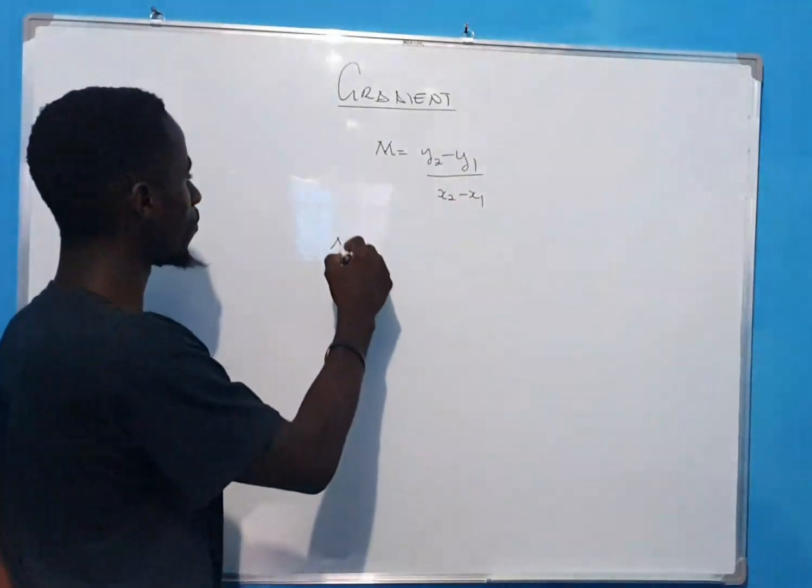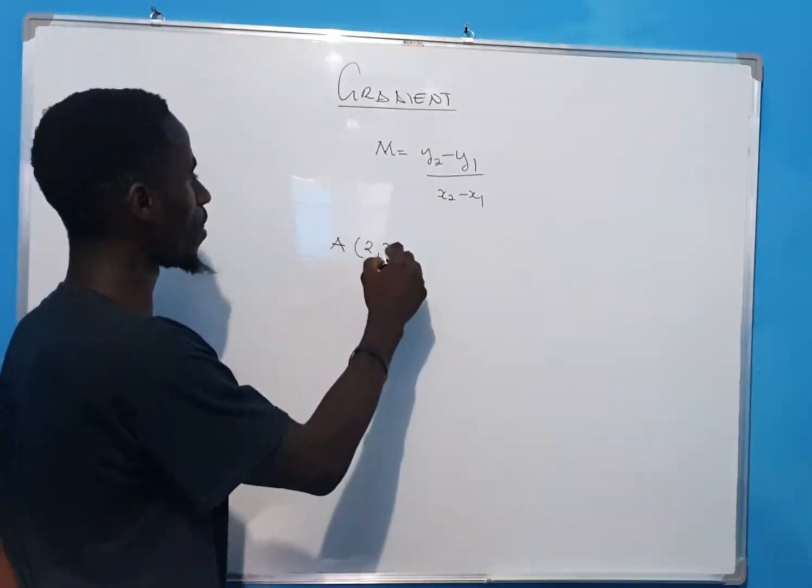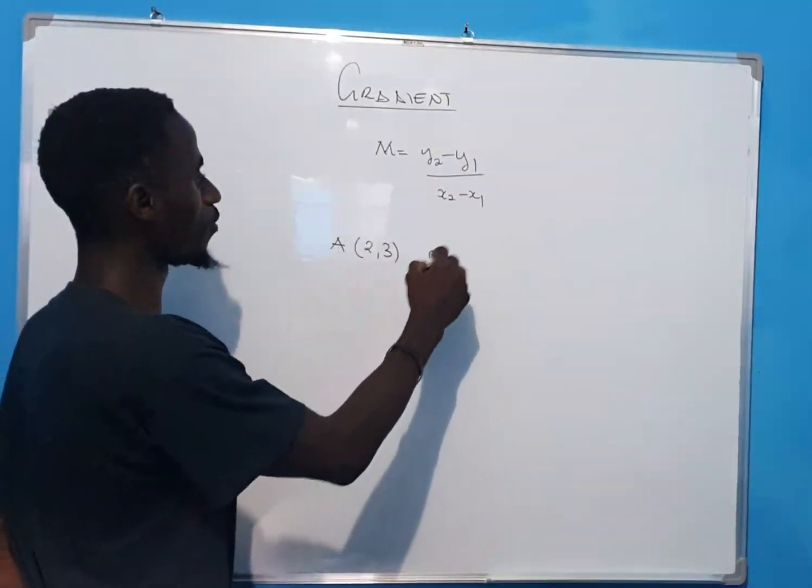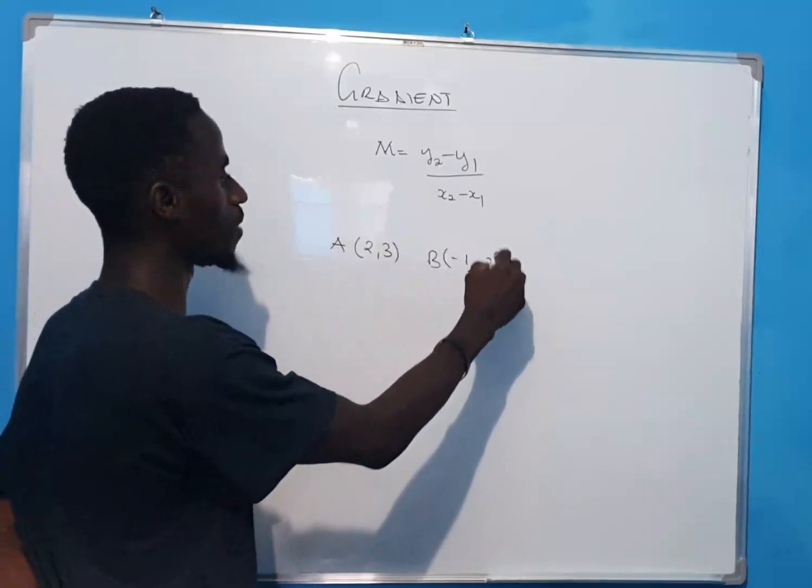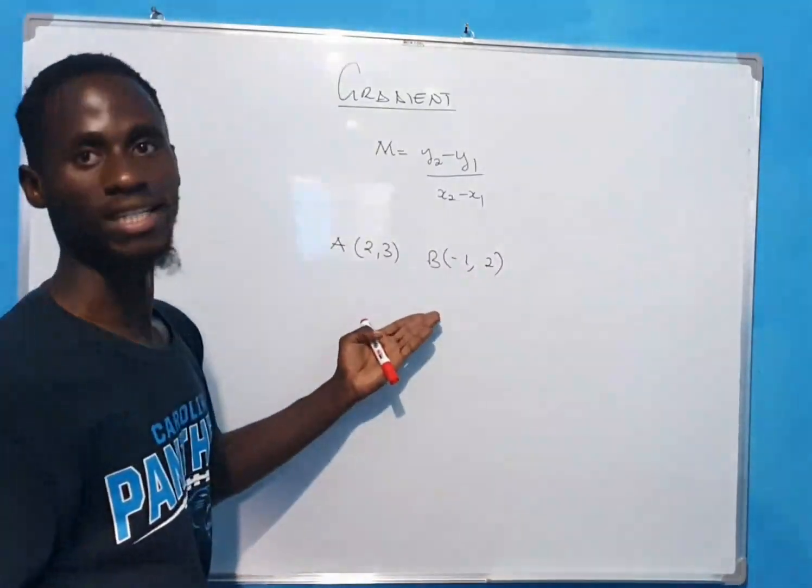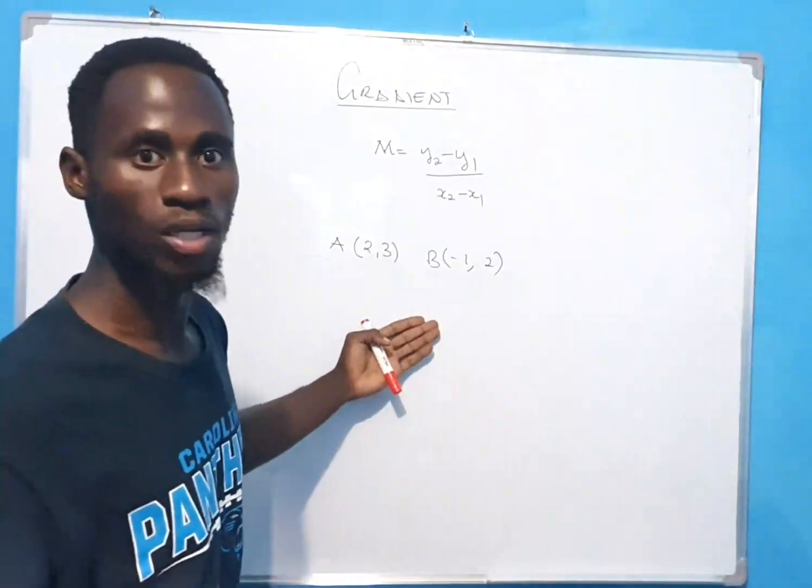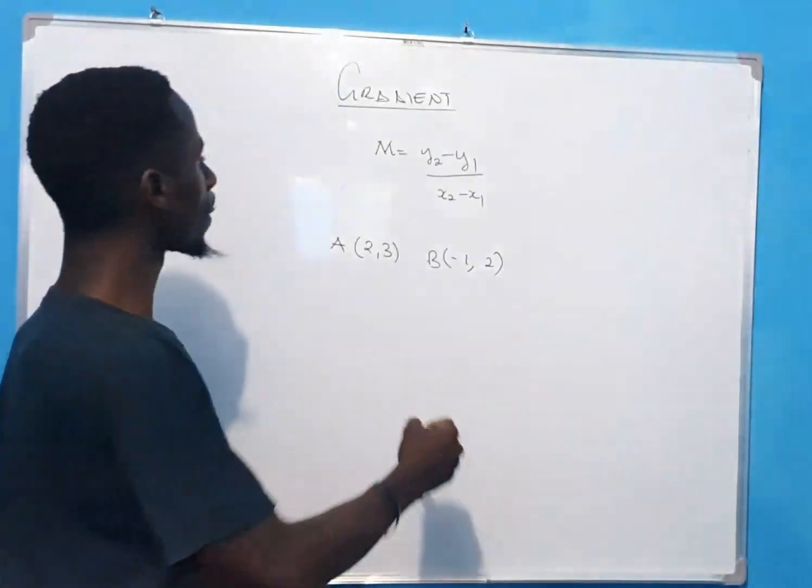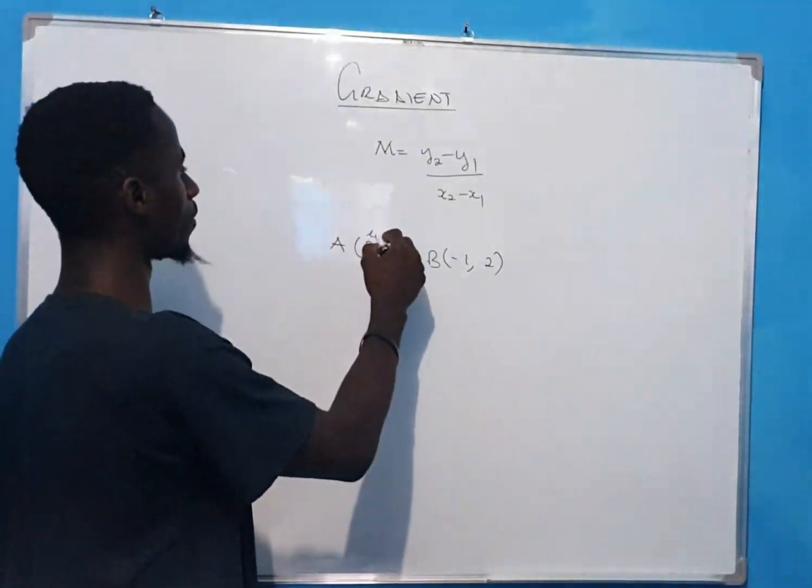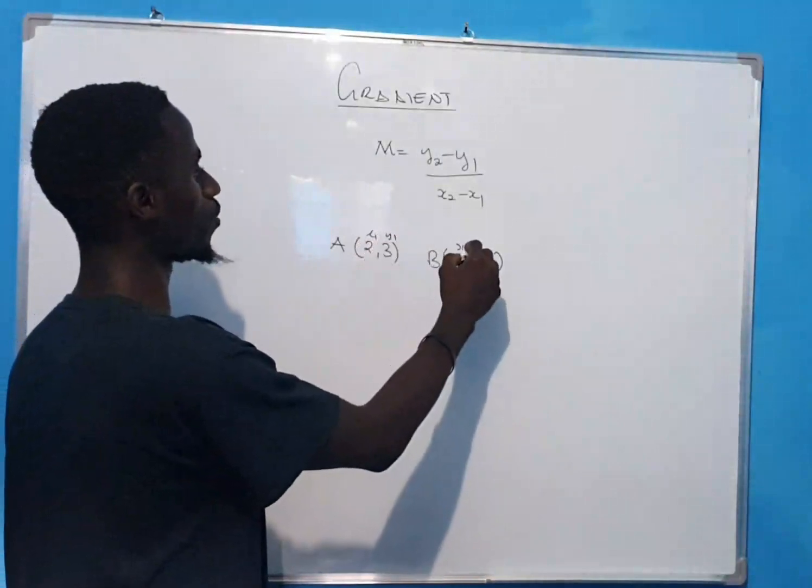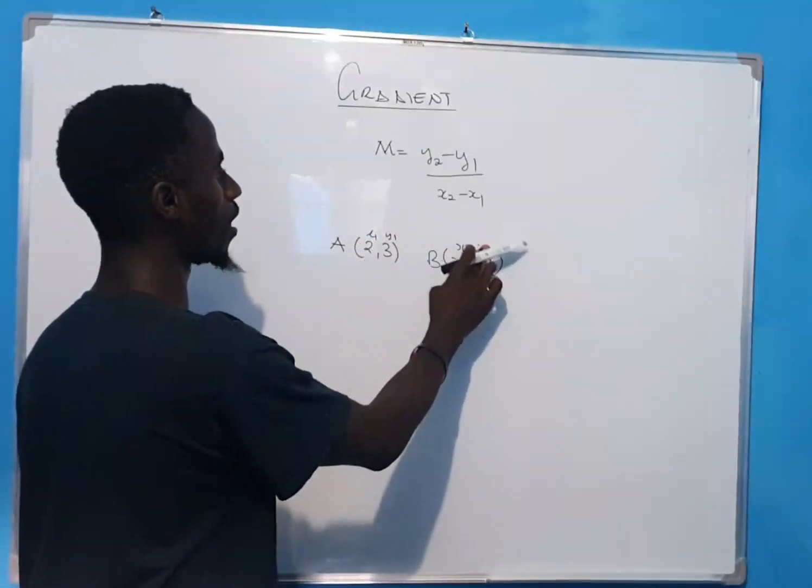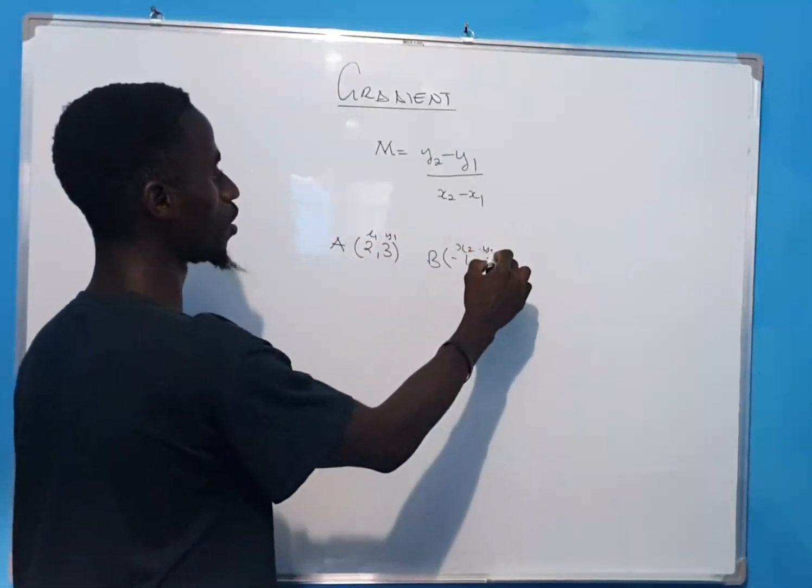Now, let's say you are given point A (2, 3) and point B is (-1, 2). What will be your gradient for that? What will be your slope? Your slope will be, this will be your x1, your y1. This will be your x2, and this one will be your y2.